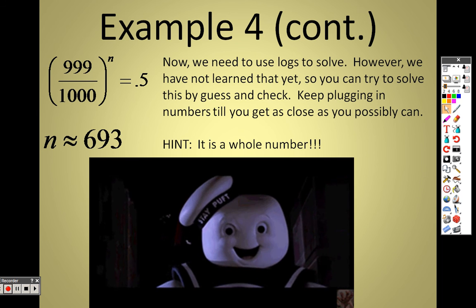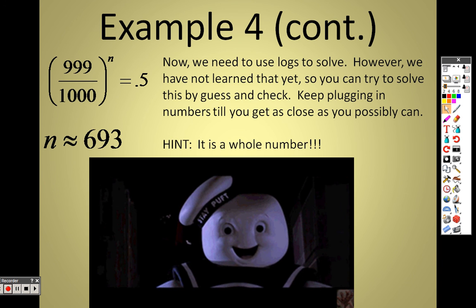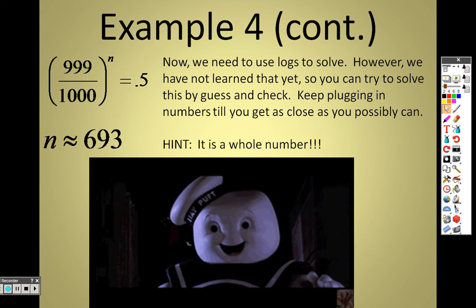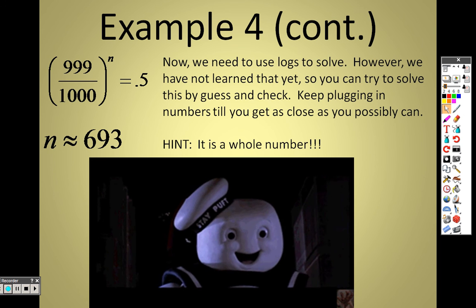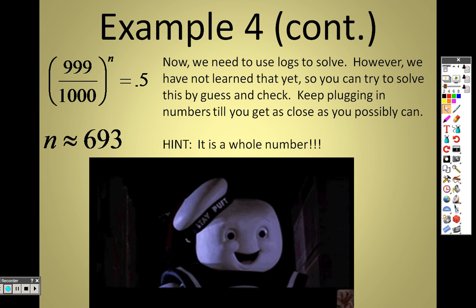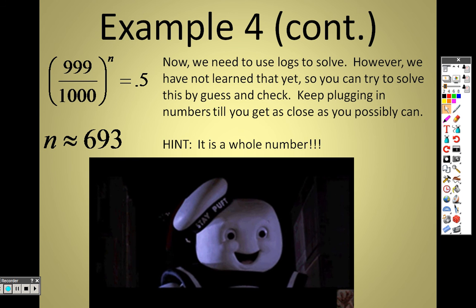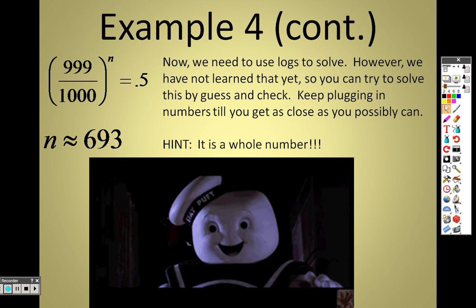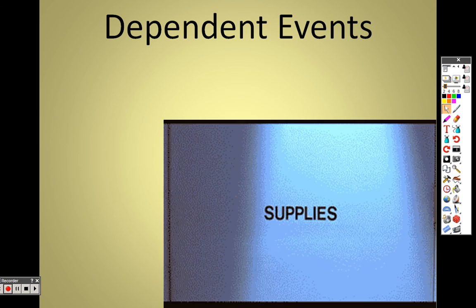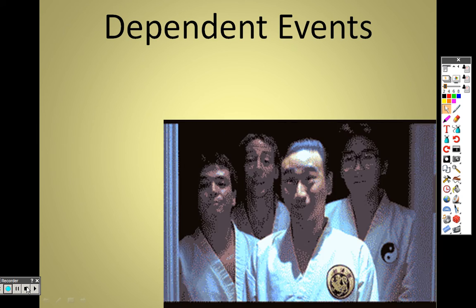Just keep typing into your calculator: (999/1000)^n, plugging in numbers and getting closer and closer. The answer turns out to be 693. We'll come back next to discuss dependent events and finish up section 12.5.